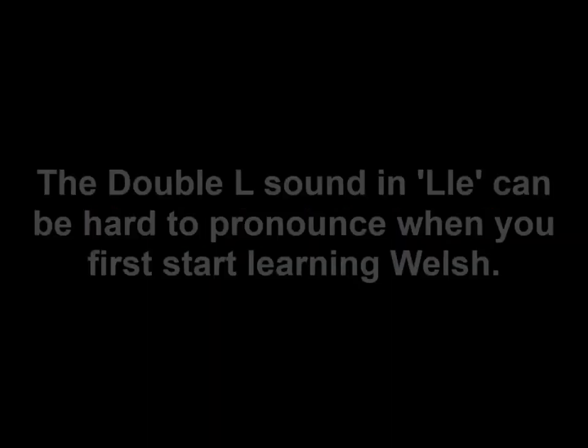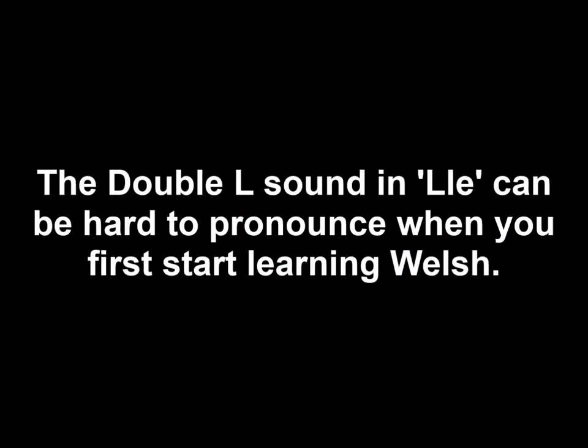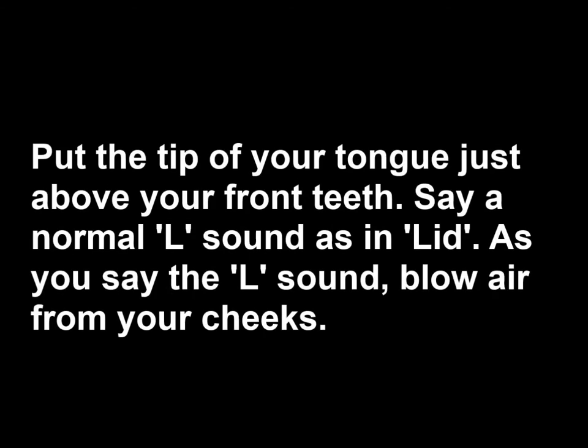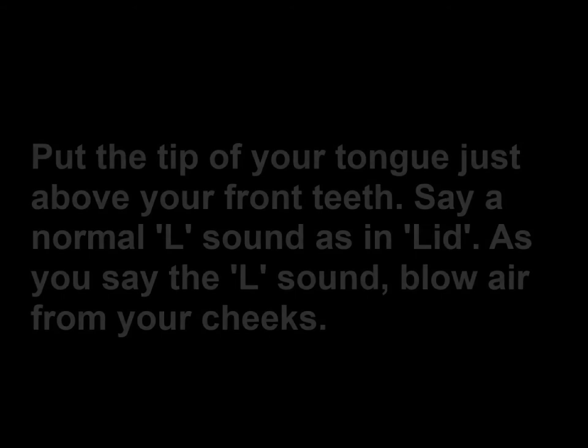'Lle' is spelt L-L-E and that double-L sound is often hard for people to say when they first start learning Welsh. To say it, put your tongue on the roof of your mouth just above your teeth and say L — like the L in 'lyd' — while blowing air. Lle dach chi'n byw? — Where do you live?